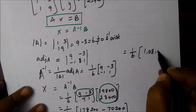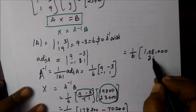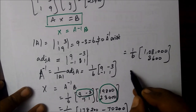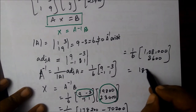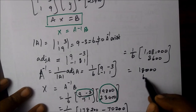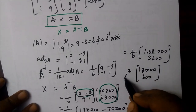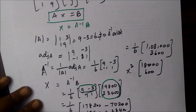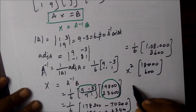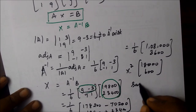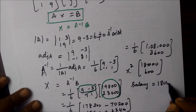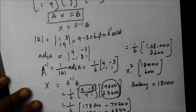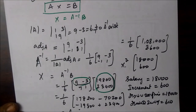So dividing by 6, the first value is 18,000 divided gives $6,000, and the second is 3,600 divided by 6 gives $600. So the initial monthly salary is $6,000 and the annual increment is $3,600. That concludes the solution. Thank you.